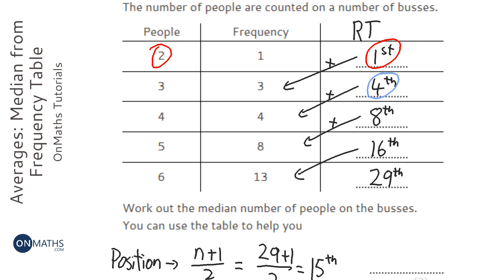The fourth value is the biggest one in this group, the eighth value is the biggest one in this group, the 16th value is the biggest one in this group, and finally, the 29th value is the biggest one in that group.